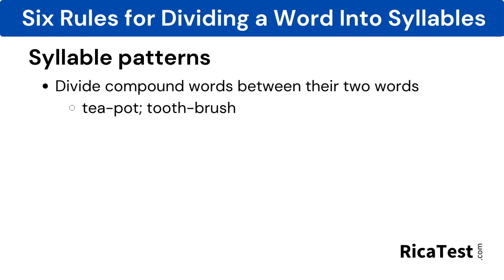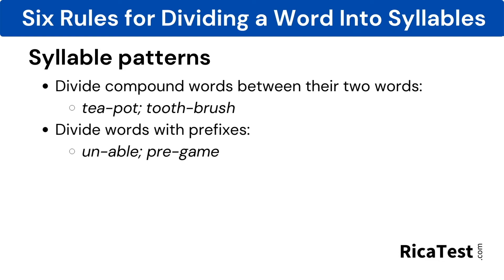Here are the rules to remember to split words up by their syllables. First, divide compound words between their two words, such as teapot and toothbrush. Next, divide words with prefixes, for example, unable and pregame.